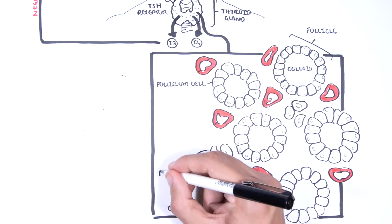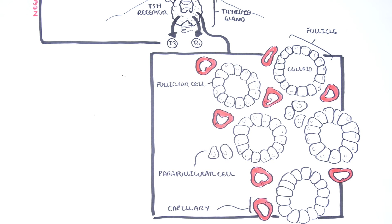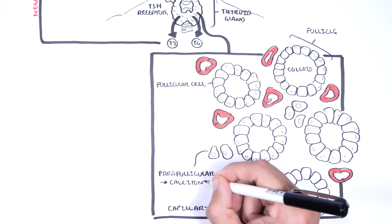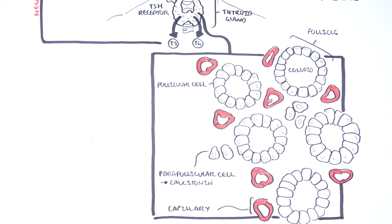Next to the follicles are the parafollicular cells, also known as C cells, which produce calcitonin, another hormone which we will not talk about, but has an important role in calcium homeostasis.